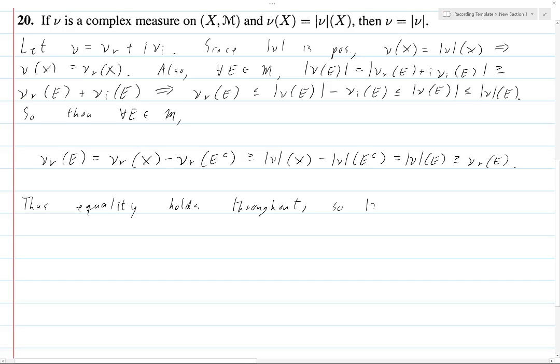So, |ν| of e equals ν_r of e. And so basically, if total variation ν of e is always equal to ν_r of e, that's very quickly going to give us what we want. First, we have to do a little bit of work. So now, note that ν_r of e.